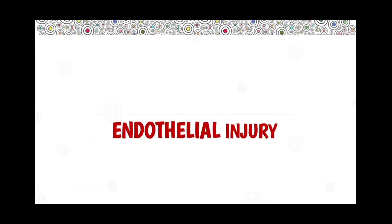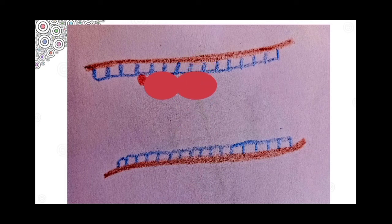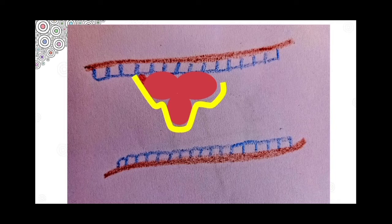Starting with endothelial injury — imagine this is your blood vessel where an endothelial injury is formed. The platelets start to adhere to the lining of the endothelium, and later more platelets join and aggregate. Along with this, fibrin threads form and attach to the platelets, tying them together. This whole solid mass is called the thrombus.